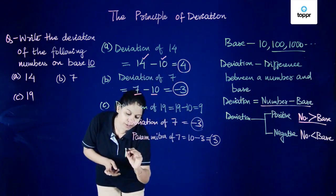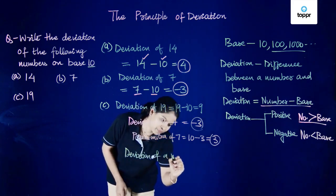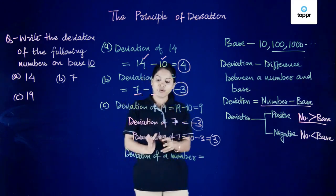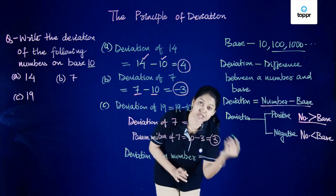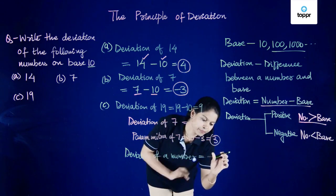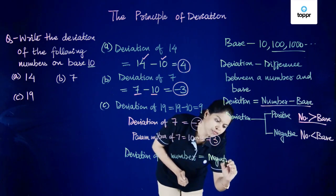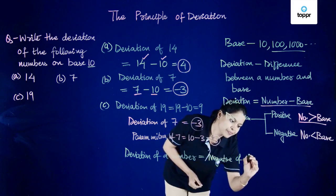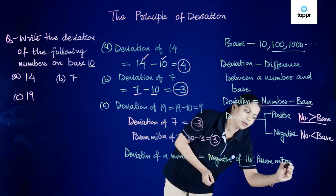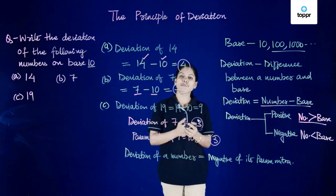So we conclude that deviation of a number is equal to negative of its paramitra. Thus we can now use this formula and find the deviation of any given number.